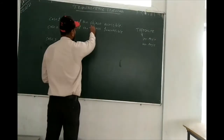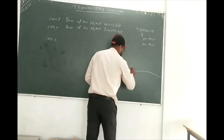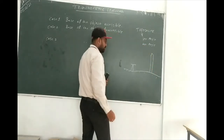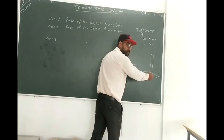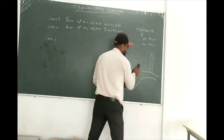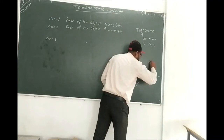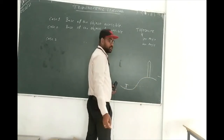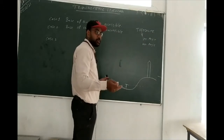For case one, looking at the figure — this is your ground level, here we keep the instrument, and this is your object. From the instrument point, we can see the base of the object, so it is easily accessible. In case two, the instrument point is here and the object is here, but the base is inaccessible from the line of sight.